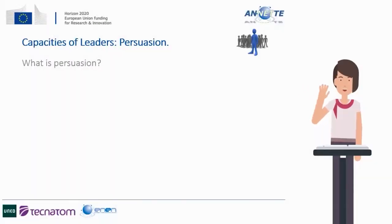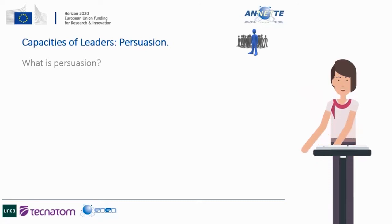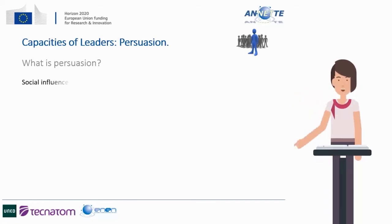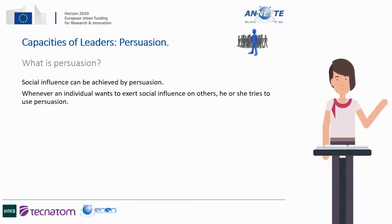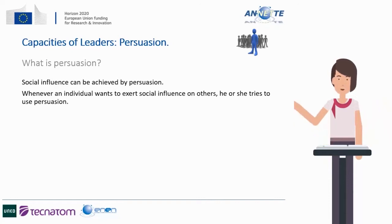Welcome back. In the first part of this unit we have already seen influence and how influence can be achieved with models, but there are more skills which are useful for leaders. Now we are going to see what persuasion is. Whenever an individual wants to exert social influence on others, he or she will try to use persuasion. By using arguments and reasons we try to lead people to accept an idea. To become a leader, one has to be a master of persuasion.